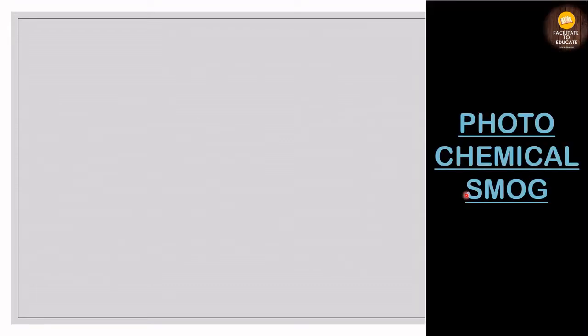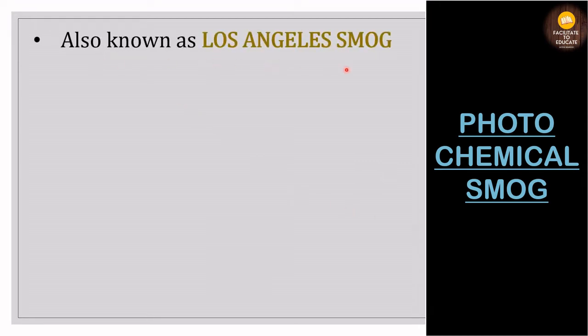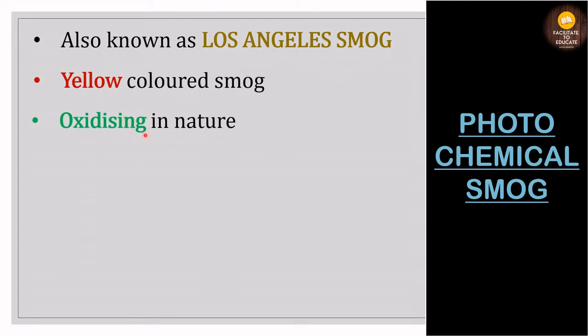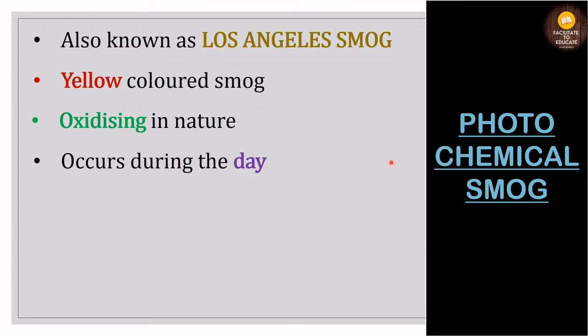Next is photochemical smog. It is also known as Los Angeles smog — just as classical smog is known as London smog. It is yellow in color and oxidizing in nature, which is opposite to classical smog. It occurs only during the day because, as the name suggests, it is photochemical — it requires light. It will not occur at night, unlike classical smog which can occur both day and night.